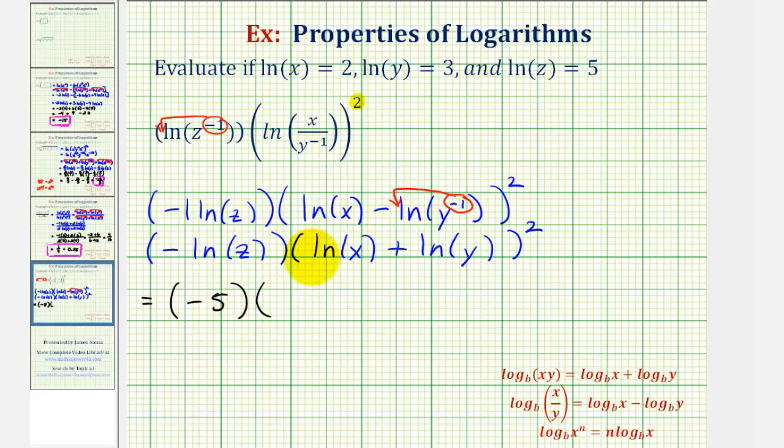And then here we have natural log x, which is two, plus natural log y, which is three, but this is squared.